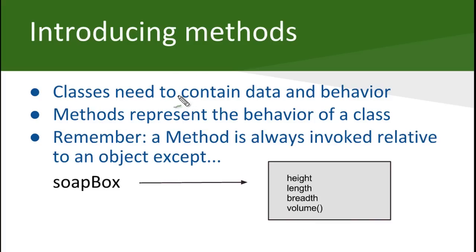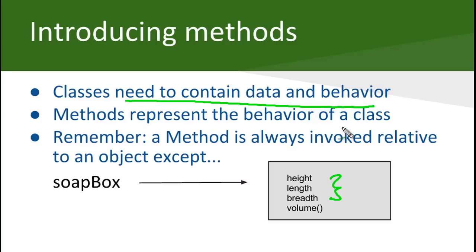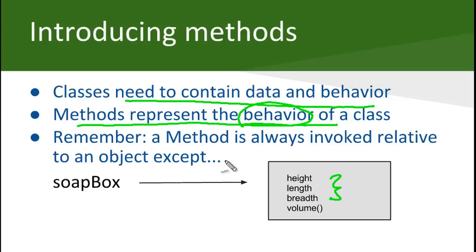The important thing to note is that classes need to have both data and behavior. These are the instance variables and that's the data. But the objects of classes also perform behavior — they interact with the outside world. For the same, we have methods, and methods represent the behavior of a class. Also remember that a method is always invoked relative to an object, except when it is defined as static, which we will see later. Let us see through an example how methods in a class work.